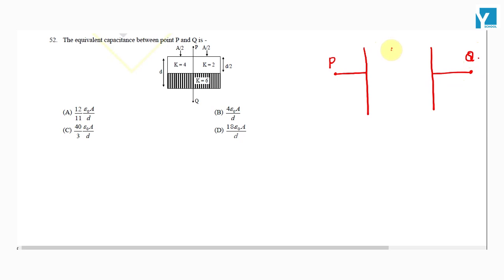In this region, the dielectric constant is 2, and this region has material with dielectric constant k equal to 4, and this complete region has material with dielectric constant k equal to 6.